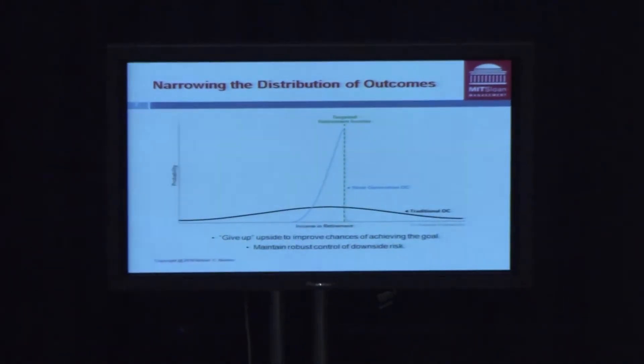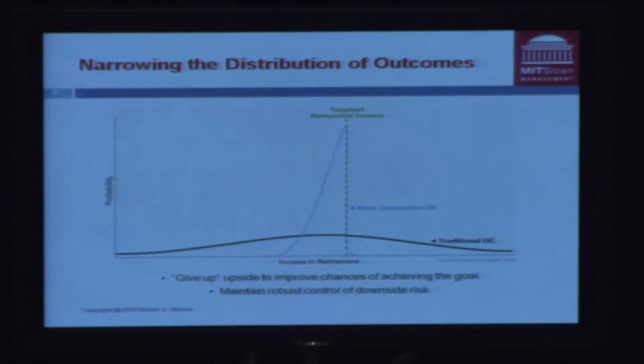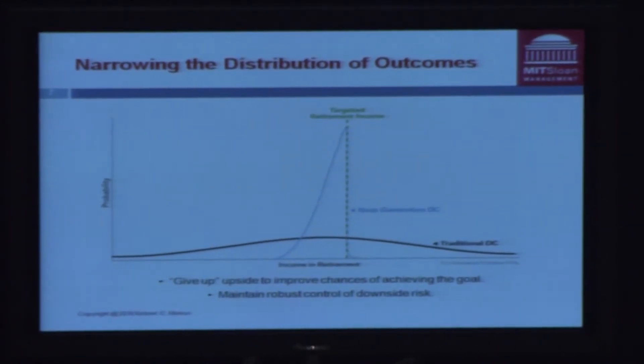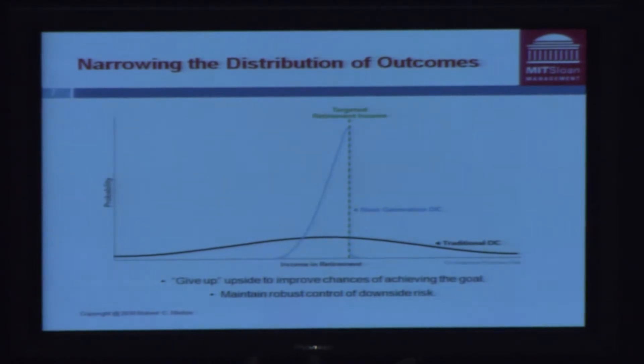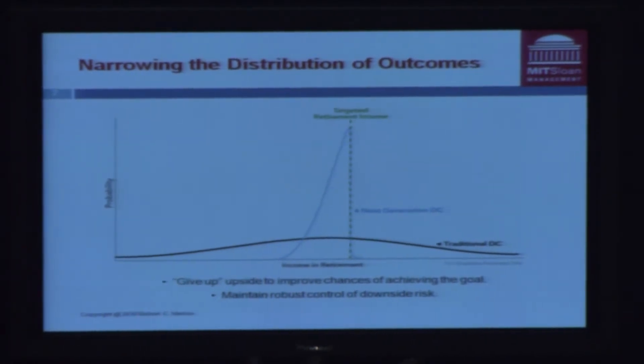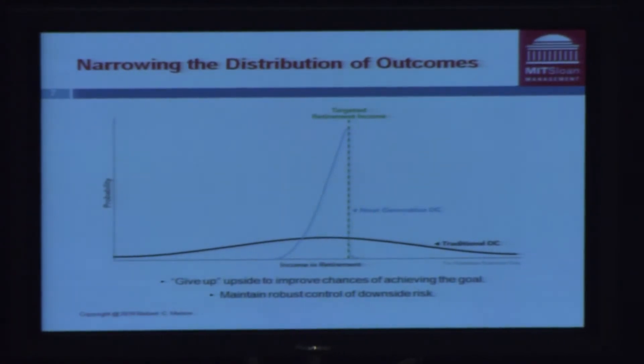We transform the distribution so that the right-side tail you get in a traditional DC you don't get — but you also don't get the left tail. You use that right tail to improve your chances of getting the goal. I'm not saying one's better than the other — it depends on the right tool for the right job. The point is that when you truly optimize, you can significantly improve the chances of success. And what we need to do for millions of people who don't have extra money is get the most out of their assets, deliver a simple, easy-to-use solution that, even if they don't use it, still gets them their best outcome.